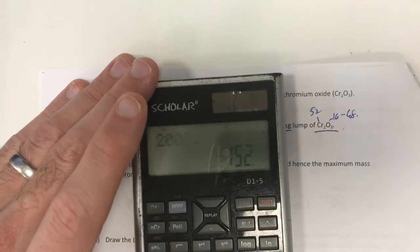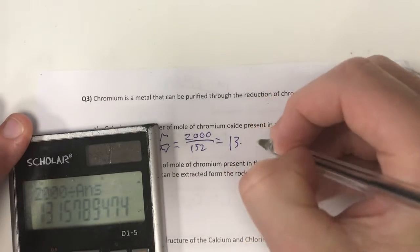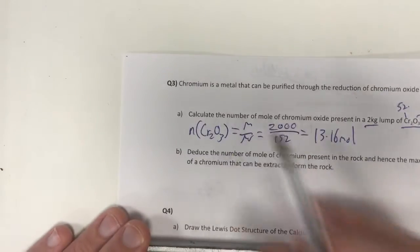So take 2,000 divided by my answer, I'll have 13.16 mole of chromium oxide.